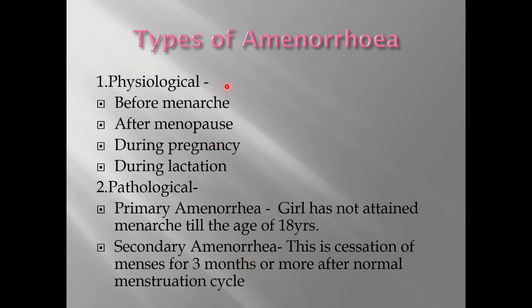Now let's see the types of amenorrhea. It is divided into two types: physiological and pathological. Physiological amenorrhea includes before menarche, after menopause, during pregnancy, and during lactation — this is normal. In pathological amenorrhea, there are two types: primary amenorrhea, where a girl has not attained menarche by the age of 18 years, and secondary amenorrhea, which is cessation of menses for three or more months after normal menstruation had previously occurred.